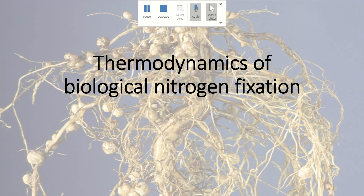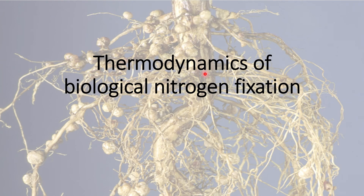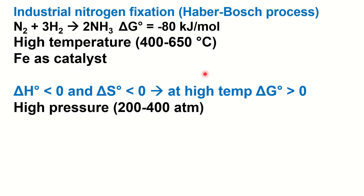Before we look at the enzyme that catalyzes nitrogen fixation from N2 to ammonia, let's look at some of the fundamentals. For reference, we're going to start with industrial nitrogen fixation. This is known as the Haber-Bosch process, which is used to make ammonia and ammonium for fertilizers for crop fertilization.